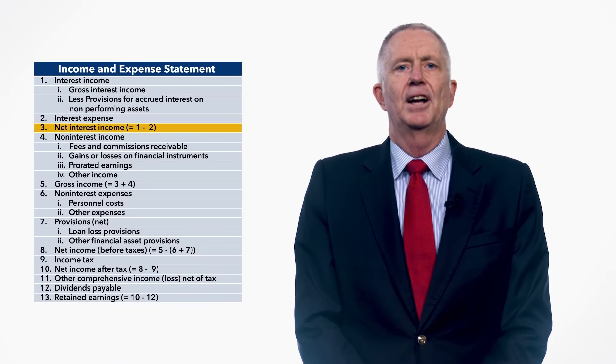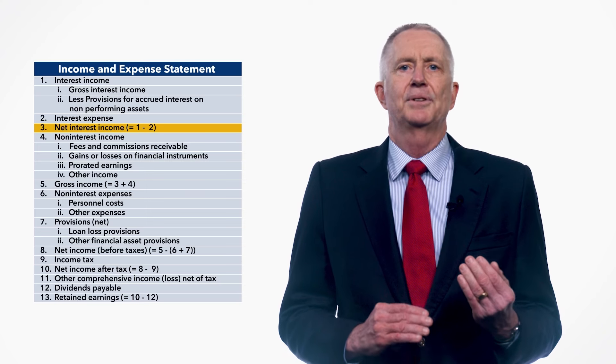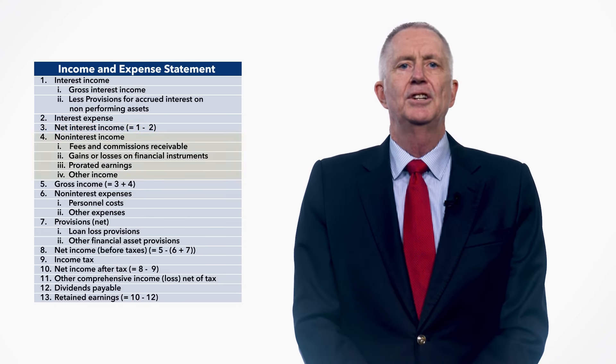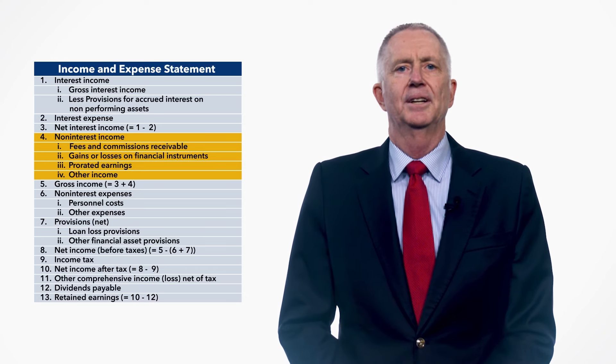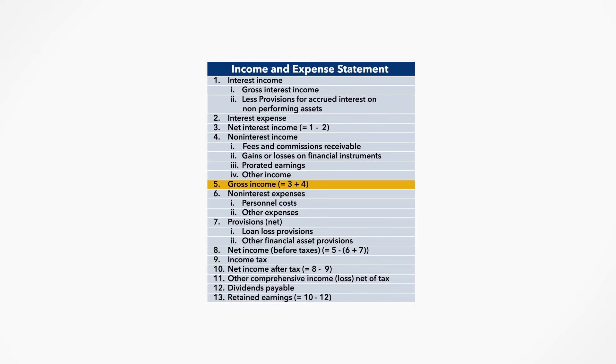Net interest income is defined as interest income, line 1, less interest expense, line 2. Non-interest income, line 4, includes all other income earned by deposit takers. Compilers will map the typically much more detailed financial statement data obtained from supervisory sources to the four subsets of non-interest income prescribed by the 2019 FSI's guide. Gross income, line 5, is the sum of net interest income, line 3, and non-interest income, line 4.